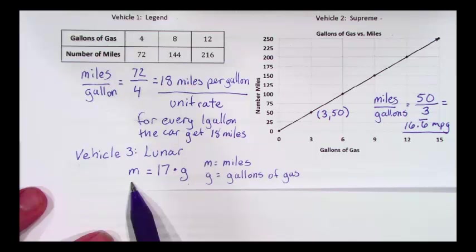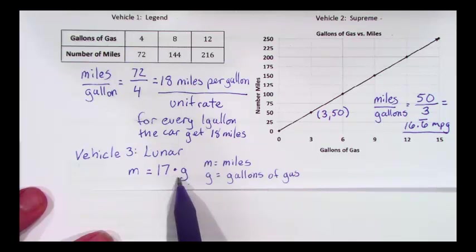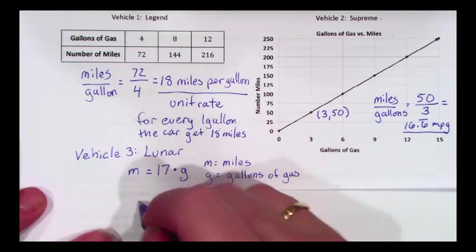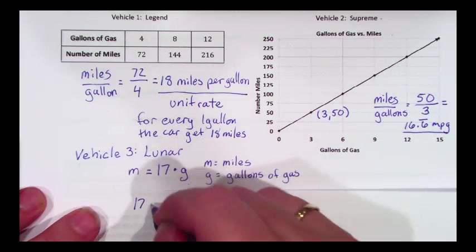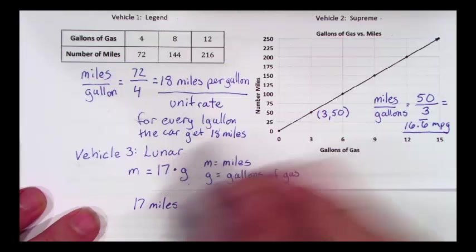If you multiply anything by one, it stays the same. So I know here that my unit rate is seventeen miles per gallon.